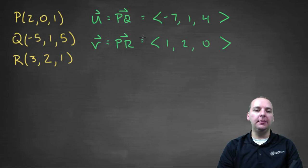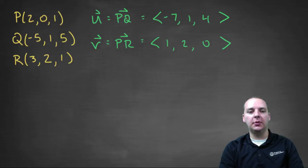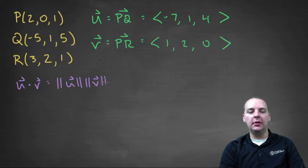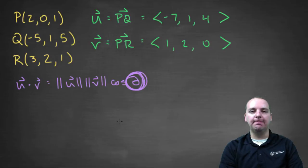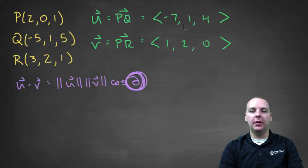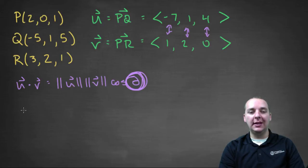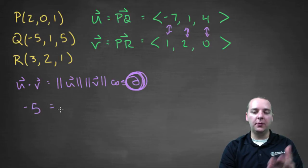Now I've got my two vectors U and V, and I'm very comfortable with finding the angle between these two. We're going to use U · V equals the magnitude of U times the magnitude of V times the cosine of the angle between them, then use algebra to find theta. U · V would be negative seven plus two plus zero — multiplying the components: (-7)(1), (1)(2), and (4)(0) — which gives you negative five.